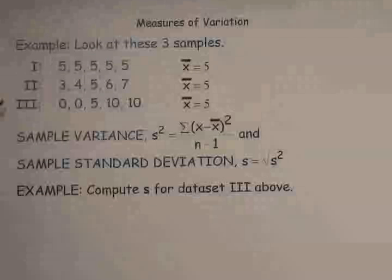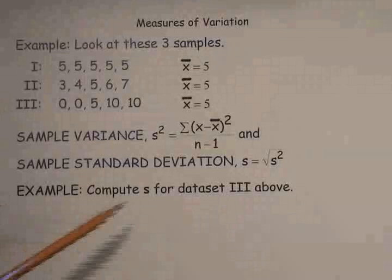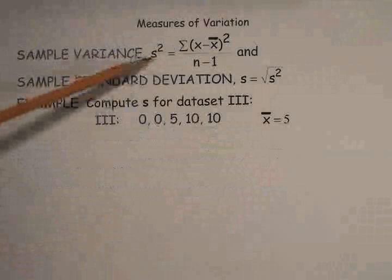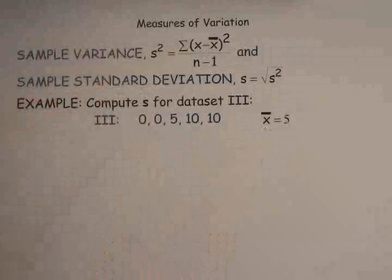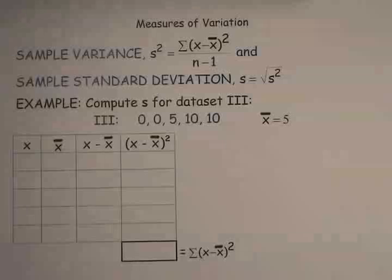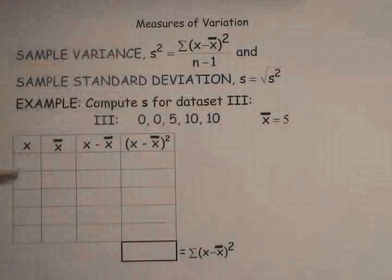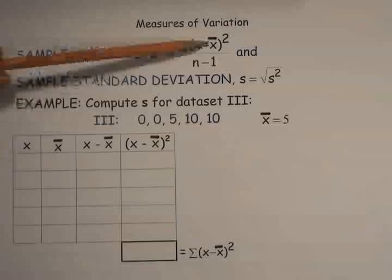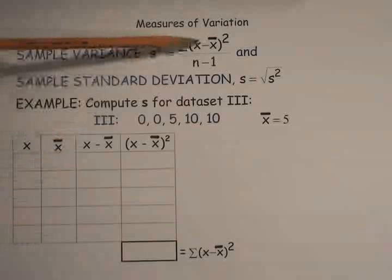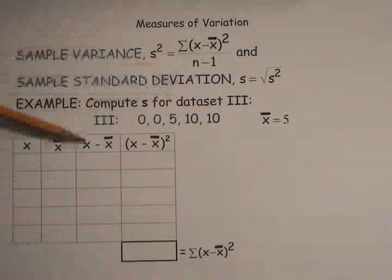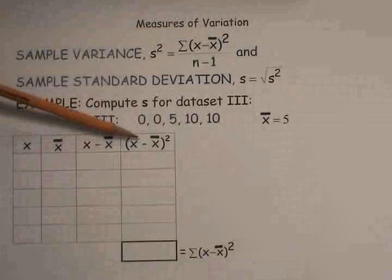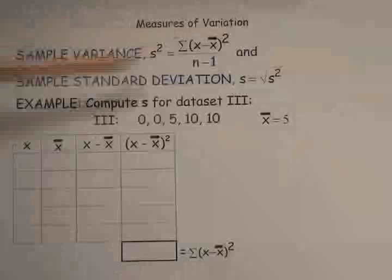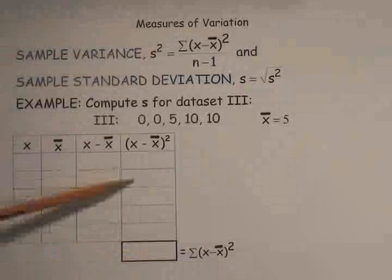As an example, let's take data set three and calculate the sample standard deviation. The formula for the sample variance has X-bar in it, and we already know X-bar equals five for all three data sets. I highly recommend a table for this calculation. You'll need an X column, an X-bar column, an X minus X-bar column for the deviations, and finally a column for squaring those deviations. At the bottom, you'll sum those squared deviations.